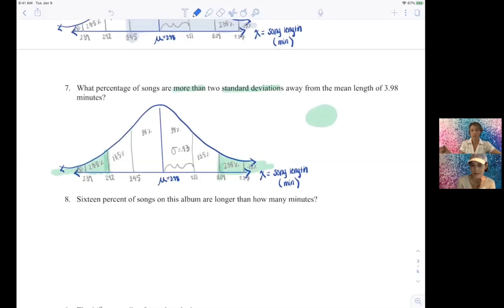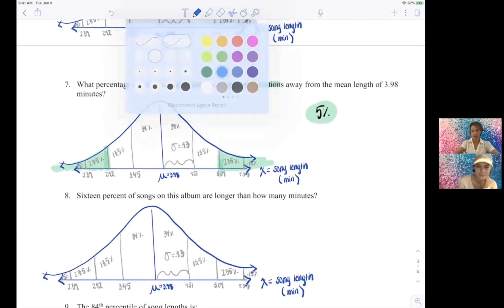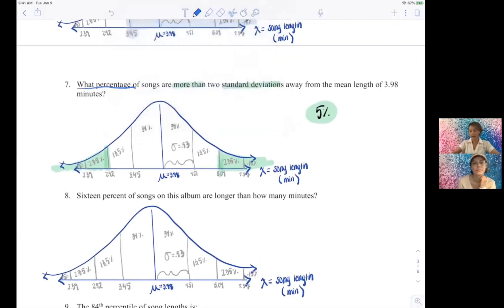2.5 plus 2.5, oops, so five percent. Nice, and also that goes with, we know it's the 68, 95, so that middle is 95 percent, so the tails of our five percent adds up to a hundred percent. It all fits together perfect. That's right.